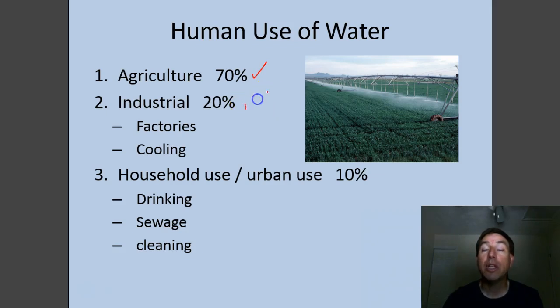20% then is used in industry for cooling power plants and other factories. It's also used as a solvent for a lot of different industrial processes. Thankfully, a lot of this water can be reused and recycled. The remaining 10% then is used for household and urban use—that goes for our drinking water, our sewage, and our cleaning. In fact, most of that water is used for disposal of our sewage.